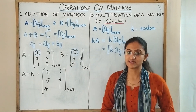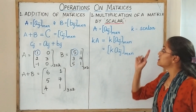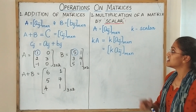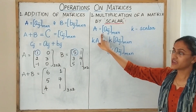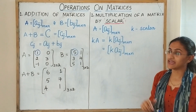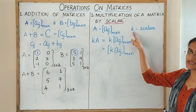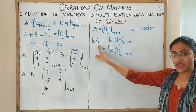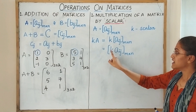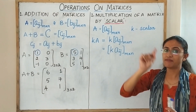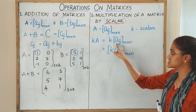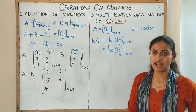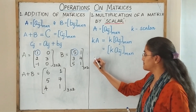Now looking at the second operation: multiplication of a matrix by a scalar. If you are given a matrix A of the form [a_ij] with order m cross n, and k as a scalar — that is, some constant — then k into A equals k multiplied into each element of the matrix A. That is the definition of multiplication of a matrix by a scalar. Let us take an example.